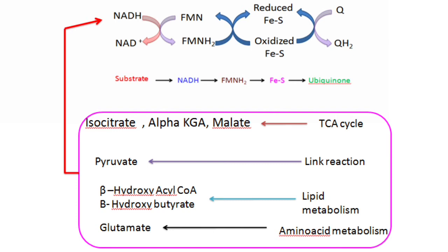The overall function of Complex I is that it transfers two electrons and two protons to ubiquinone, and also transfers four protons from the matrix to the intermembrane space, using the energy released during electron transfer.